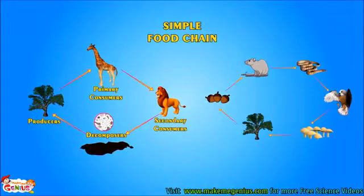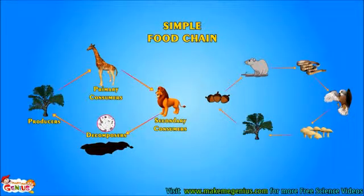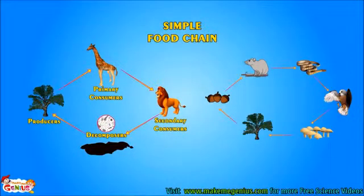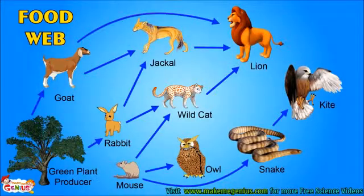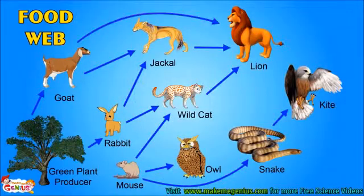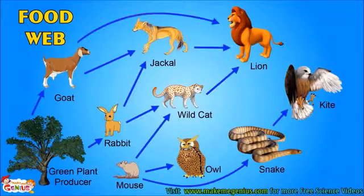The food chains we saw, which have one producer, one primary consumer, and one secondary consumer, are called simple food chains. Actually, life is not so simple. Look at this picture — it is very complex. A rat can be eaten by a cat or by a snake. A plant can be eaten by a goat or by a rabbit. These kinds of complex food chains are called a food web, as they are very interconnected, like a spider web.